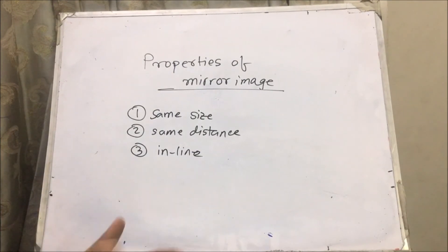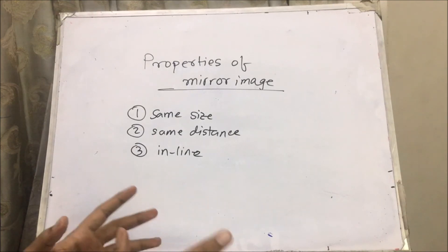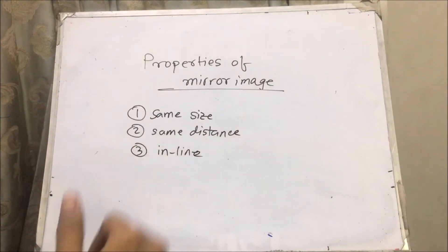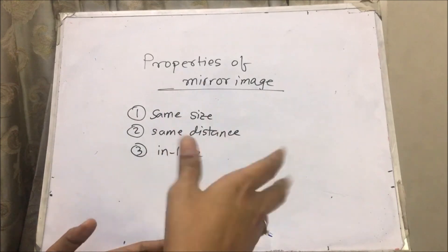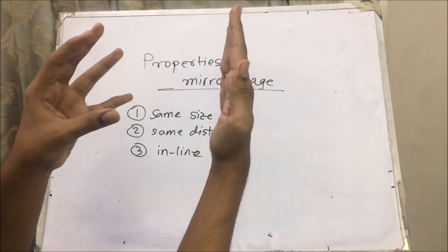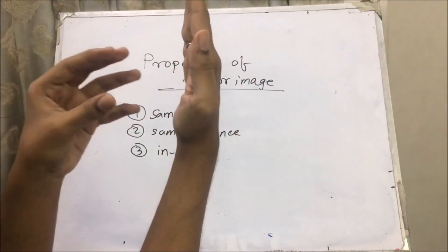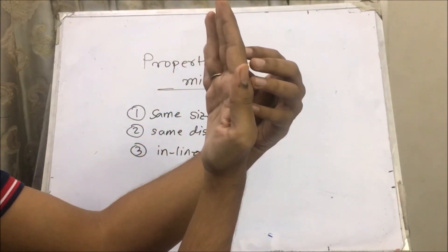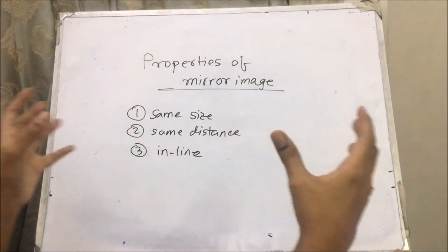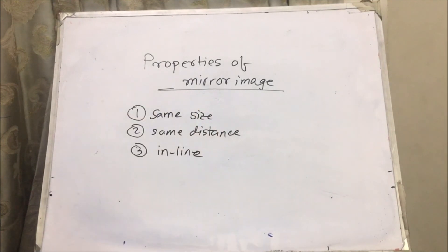Properties of mirror image: when you see your image in the mirror, there are some properties which you have already noticed but never gave thought to. The image that you see, provided it is a normal mirror, is the same size as you are — it doesn't show you as bigger or smaller. Same distance: if you move closer to the mirror, that image inside the mirror will also move closer. You and your picture are always the same distance away from the mirror.